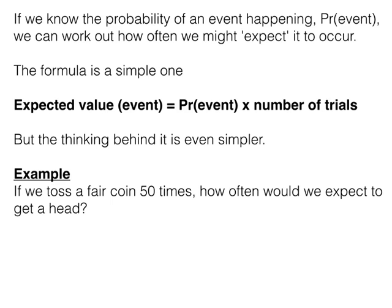We're looking at something called the expected number, and this is what we're talking about. If we know the probability of something, that something's going to happen, then we can work out how often we might expect it to happen. And there's the formula. The expected value of an event equals the probability of an event times the number of trials.